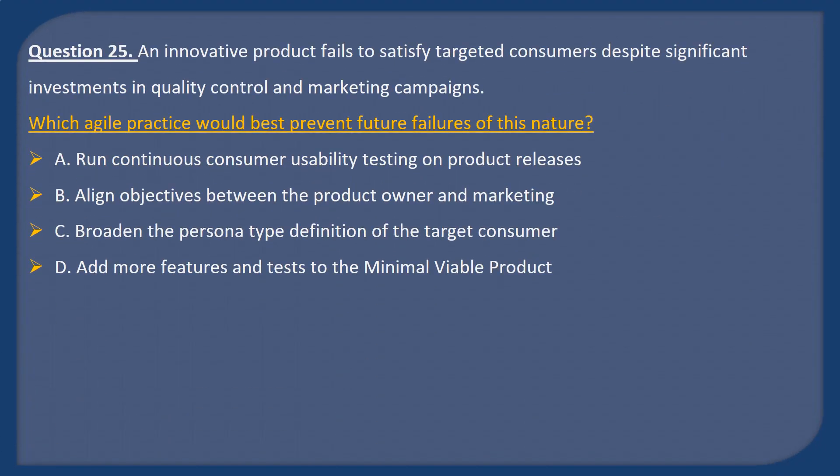Question 25. An innovative product fails to satisfy targeted consumers despite significant investments in quality control and marketing campaigns. Which Agile practice would best prevent future failures of this nature? A: Run continuous consumer usability testing on product releases. B: Align objectives between the product owner and marketing. C: Broaden the persona type definition of the target consumer. D: Add more features and tests to the minimum viable product.